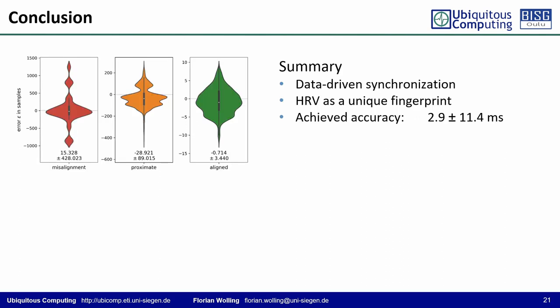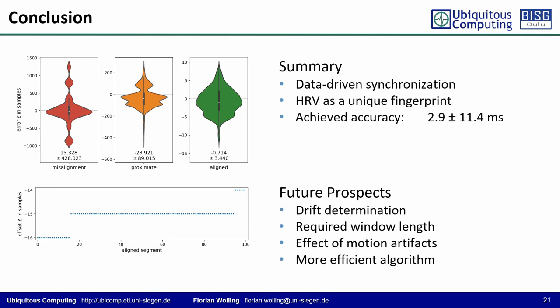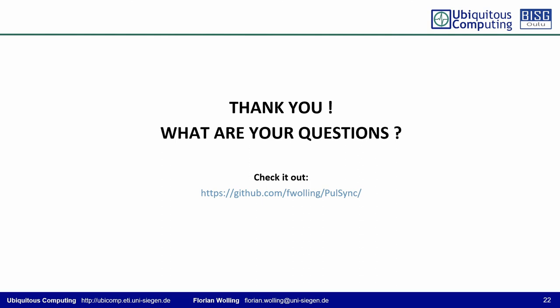We have presented Pulsync, a novel method for the data-driven synchronization of sensor data across multiple wearable devices. The method uses the heart rate variability interval function as a unique fingerprint to match the local time basis. We achieved an accuracy of about 3 milliseconds for ECG signals sampled at 250 Hz. The results are promising and unveiled even small drift across the devices' clocks. In future research, we will evaluate the required window lengths for unique matching and the effect of motion artifacts on accuracy and reliability. The normalized cross-correlation is not a very optimal method, and we are already developing a more efficient algorithm to replace it. Please check out the project's GitHub repository. Thank you for your interest, and I look forward to answering your questions.